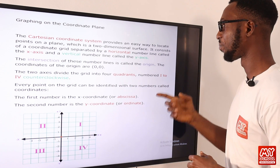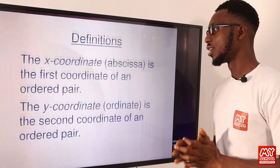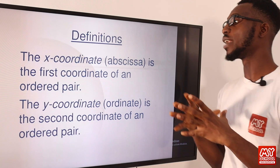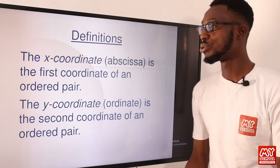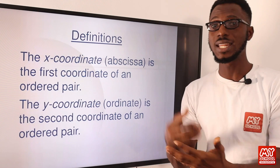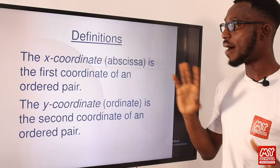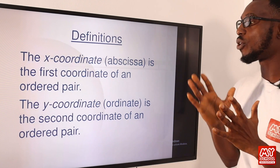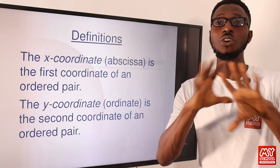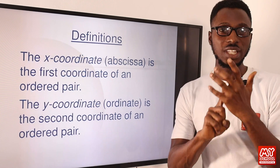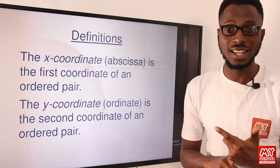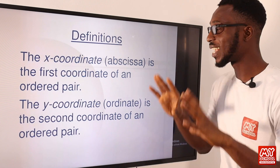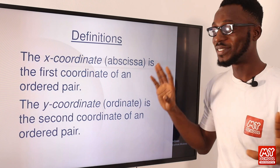Let's elaborate on this concept. The x coordinate — the abscissa — is the first coordinate of an ordered pair. The y coordinate, or ordinate, is the second coordinate of an ordered pair. So for any coordinates, the first coordinate is your abscissa (value for x) and the next one, your ordinate, is the value for y. That is basically what this presentation has been talking about.